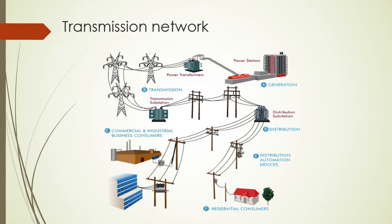This picture shows us a transmission line network. We transfer power from the power station, boost it up using a power transformer, then follow the three-phase transmission line to some substation, and finally to distribution at commercial, industrial buildings, or residential consumers.